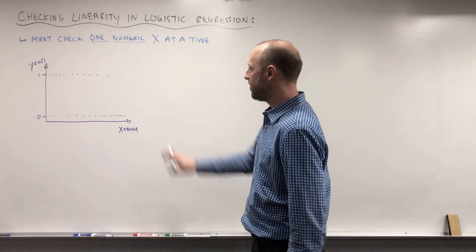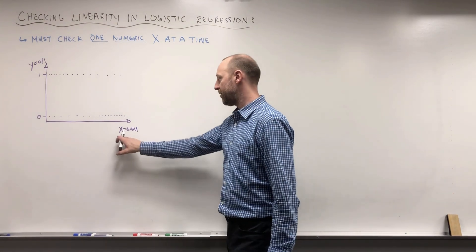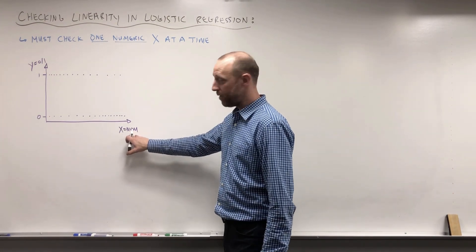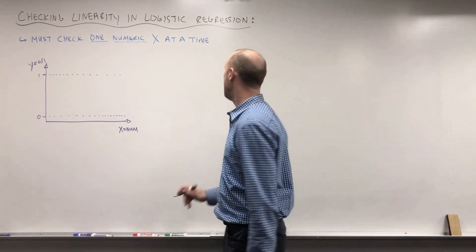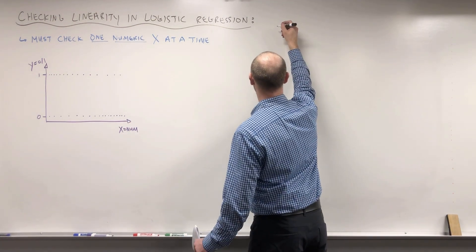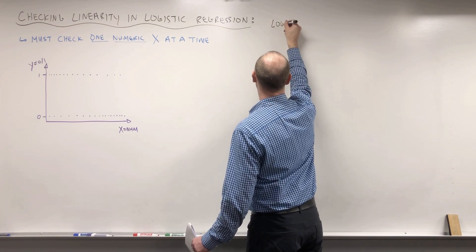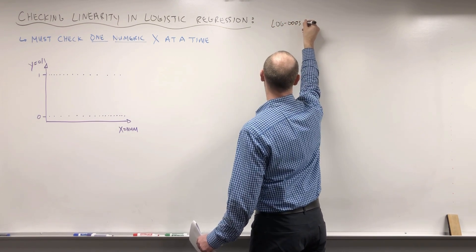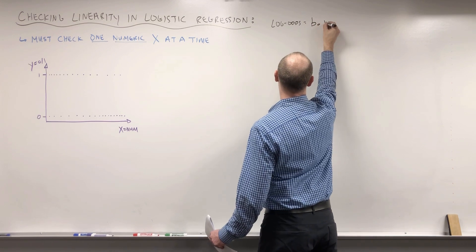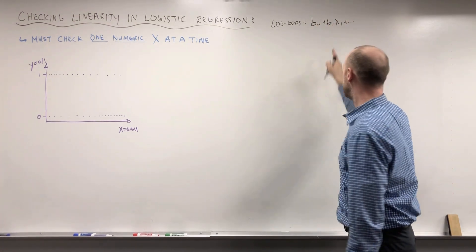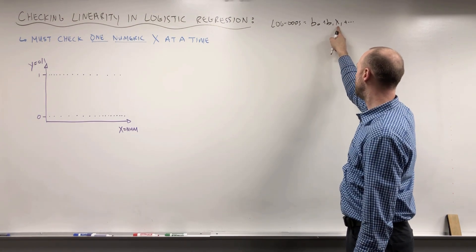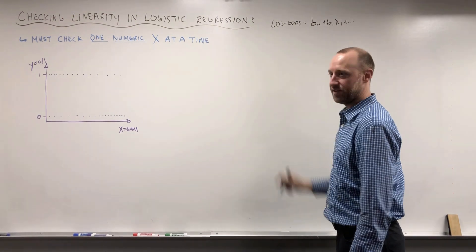So here what I've done is put just some generic data down where we have x being a numeric variable. We want to check if that's linearly related to the log odds. Remember we have the log odds of the outcome are b0 plus b1x1 and so on. So we're assuming that the relationship between numeric x variables and the log odds is linear.